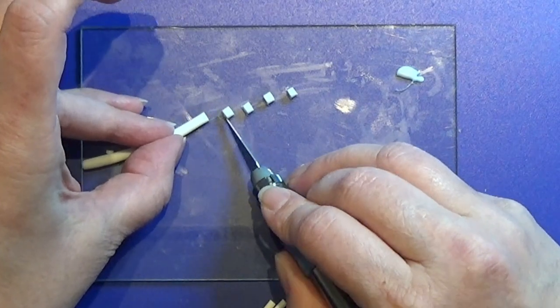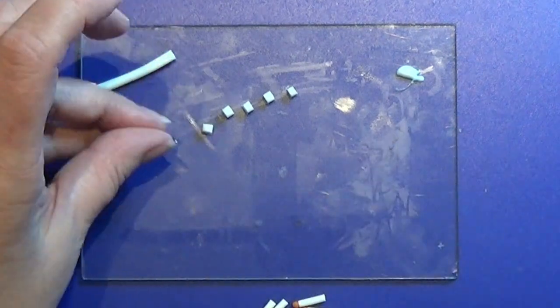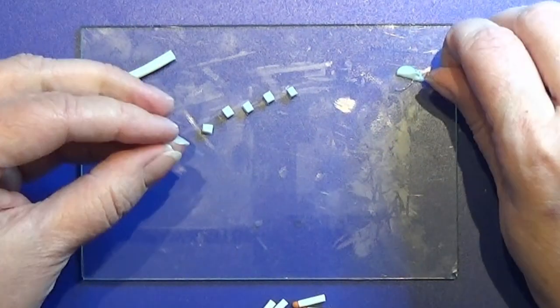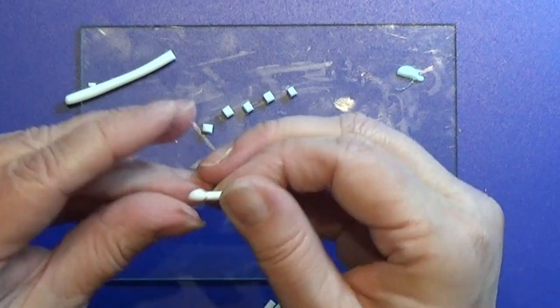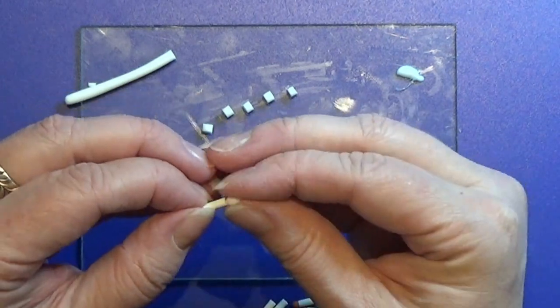Then I take some translucent clay, and I am making the flame shape around this orange piece that we just made.